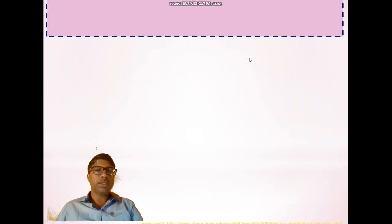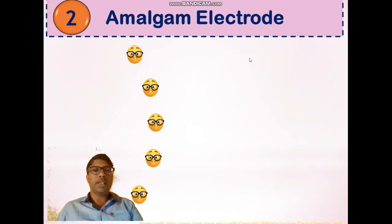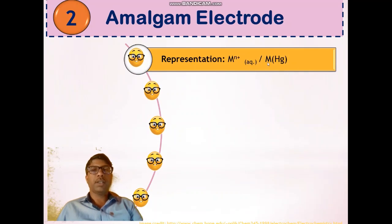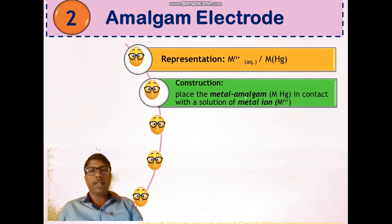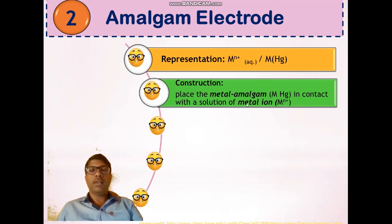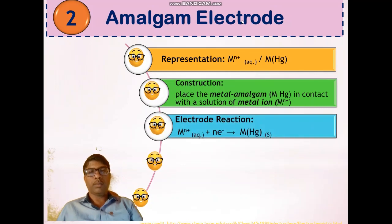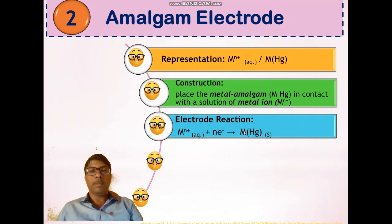The next electrode is the amalgam electrode, represented as M^n+ (aqueous) / M(Hg), where M^n+ is the metal ion and M(Hg) is the metal amalgam. For construction, we require a metal amalgam, a solution of metal ion, and a beaker. When we place the metal amalgam electrode into the solution of metal ion, the amalgam electrode is formed. The electrode reaction is a reduction reaction in which M^n+ ions gain n electrons to form metal amalgam, which is an impure form of the metal.